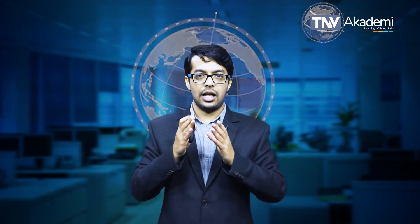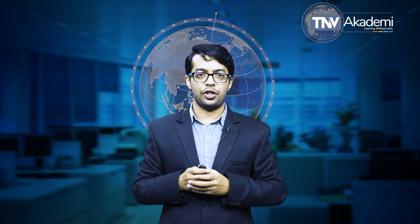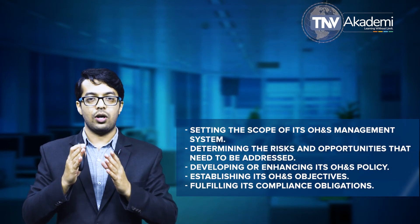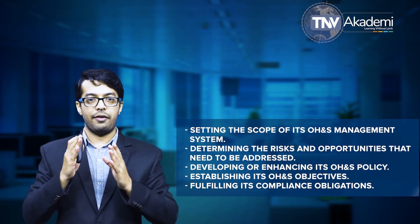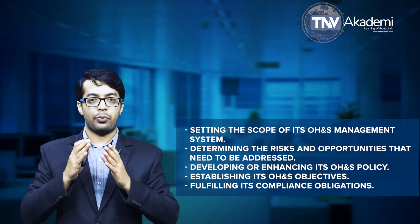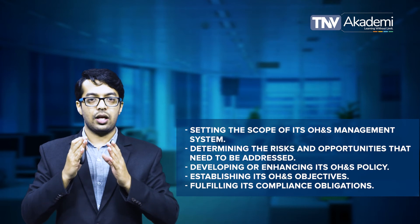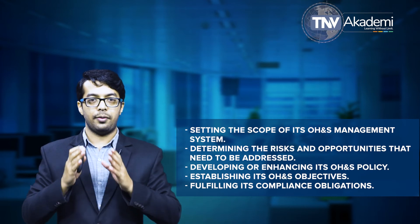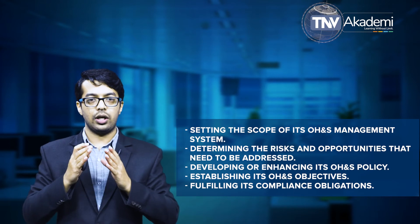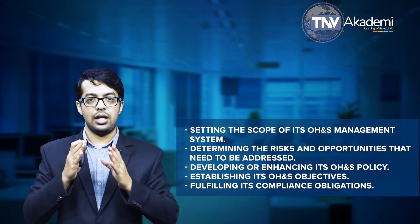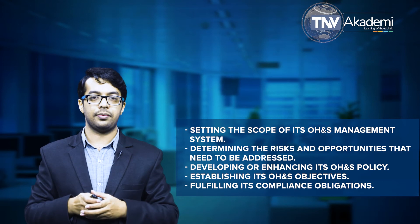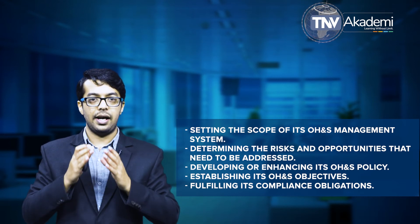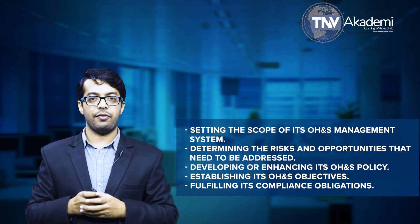The results can be used to assist the organization in: Point 1 — setting the scope of its occupational health and safety management system; Point 2 — determining the risks and opportunities that need to be addressed; Point 3 — developing or enhancing its occupational health and safety policy; Point 4 — establishing its occupational health and safety objectives; Point 5 — fulfilling its compliance obligations.